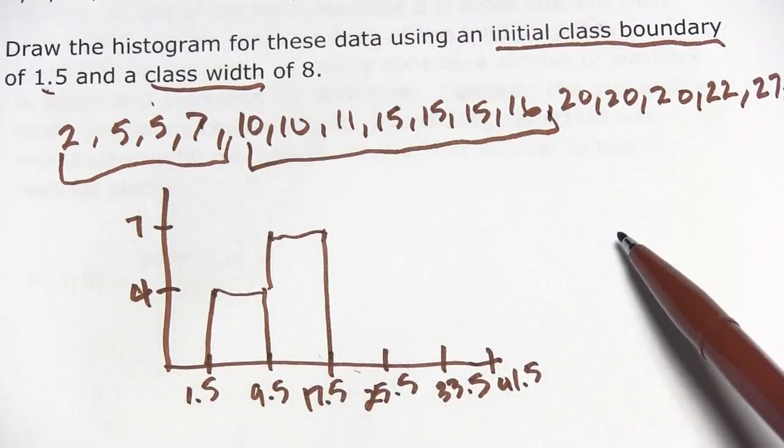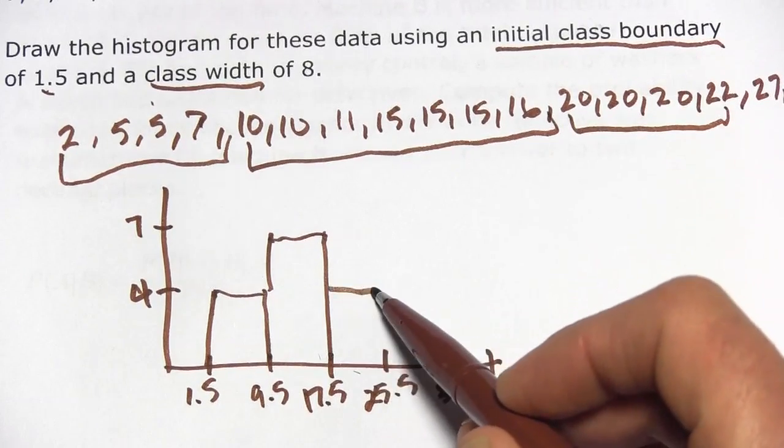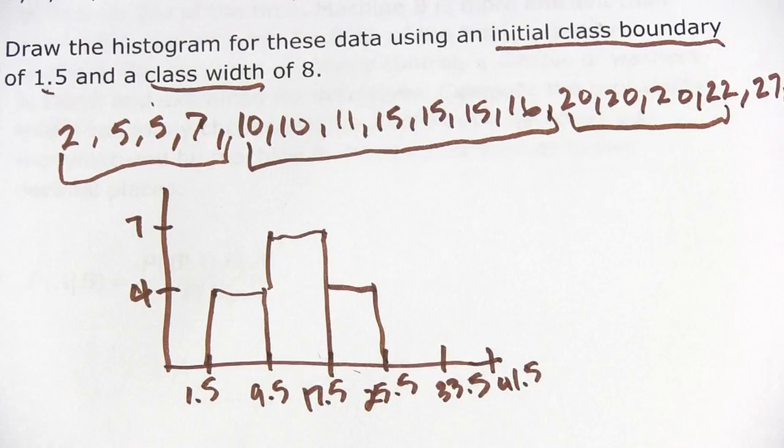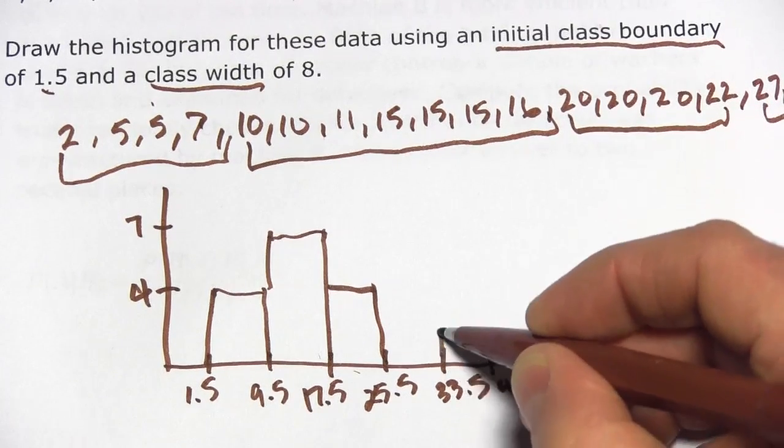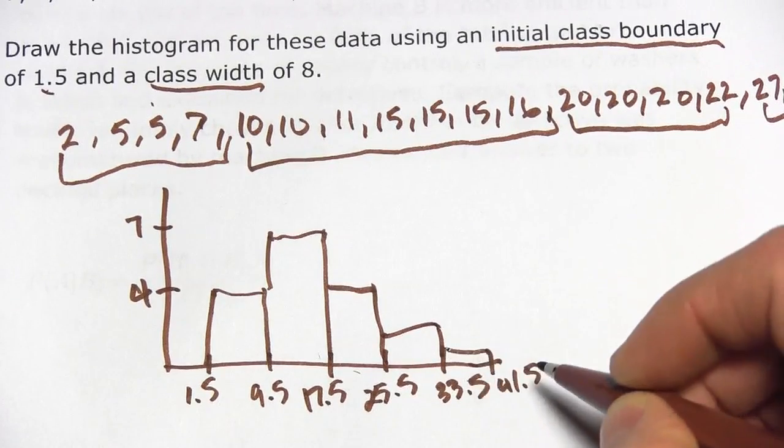And the next class would be up to 25.5. That's going to have 4. And then the next class would be up to 33. That's going to have 2. And then finally the last class only has 1 in it.